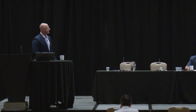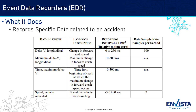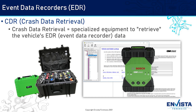The EDR records specific data related to an accident. The data looks like engineering-type data — changes in forward crash speed, maximum change in forward crash speed, and so forth. This is the type of data generated through your input as you operate the vehicle. CDR, or crash data retrieval — not to be confused with call detail records — is the actual process by which you use tools and methods to collect the information from the event data recorder.